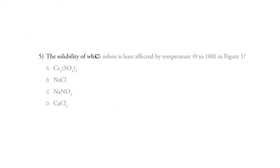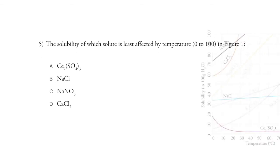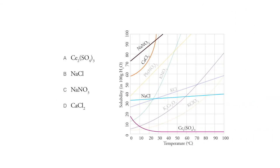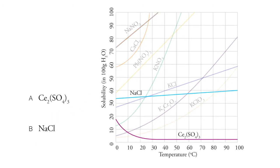Number five: the solubility of which solute is least affected by temperature in figure one? As we look across the temperature on the x-axis, we can eliminate two of the choices because temperature seems to affect them quite a bit. We're left with two candidates. Over the course of zero to 100 degrees, one of them — table salt — has a solubility that only goes up by six grams, meaning you can hold only six grams more at 100°C than at 0°C.